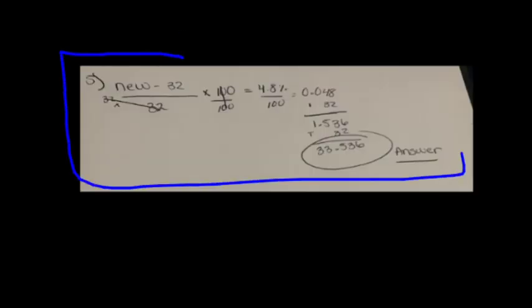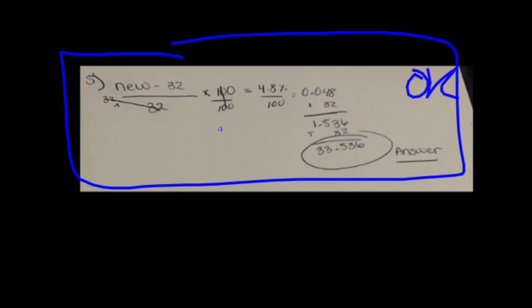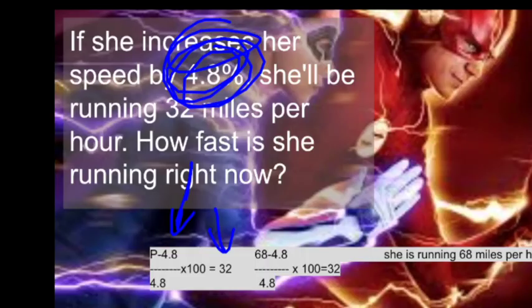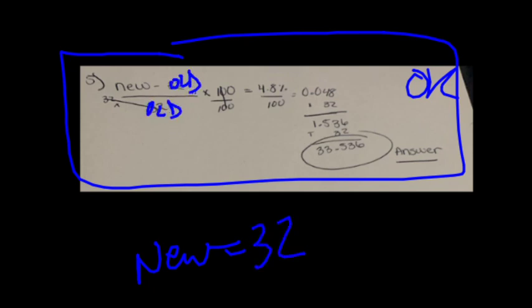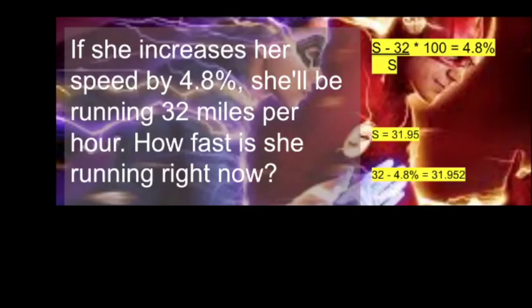This would be okay as an answer — it's wrong, but I accept the misreading of the problem. 32 miles per hour is the new speed. If she increases her speed by this much she will be — so 32 is the new speed, so you actually want new to equal 32 and you don't know old. Since you have old in two spots, you might want to use one of the alternative formulas that only has old in one spot.